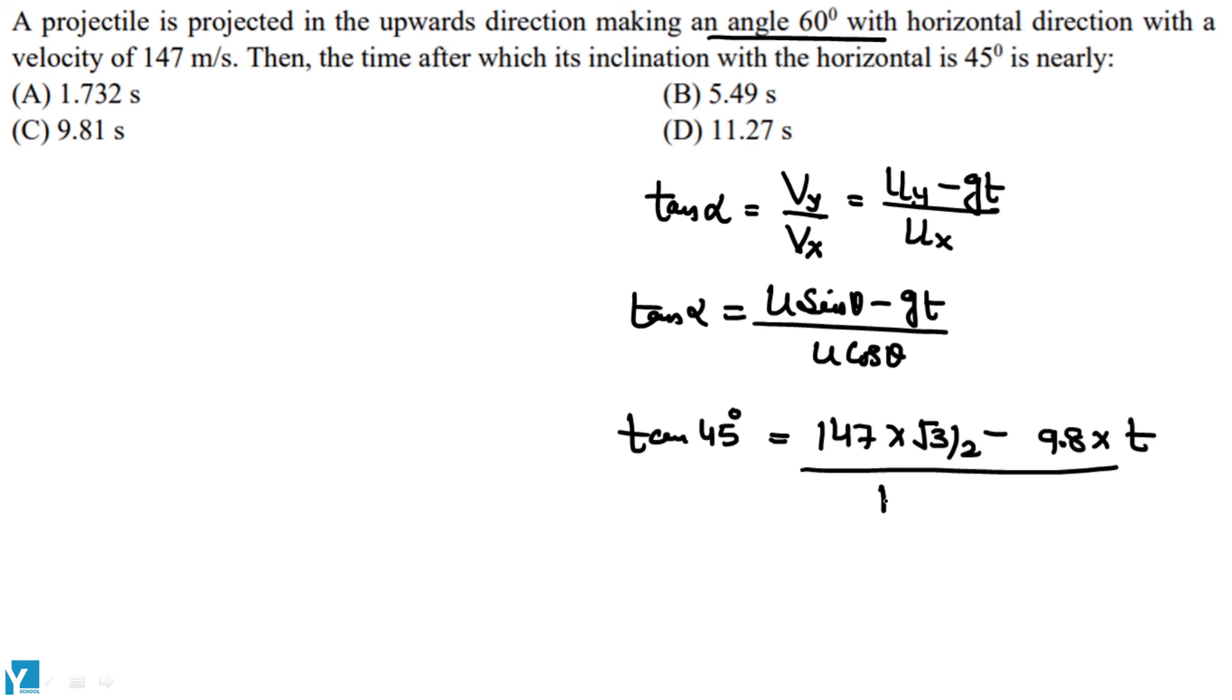u, 147 multiplied by cos 60. Cos 60 is 1 by 2. On calculation we will get this time nearly equal to 5.49 seconds. This is our required answer, option B.